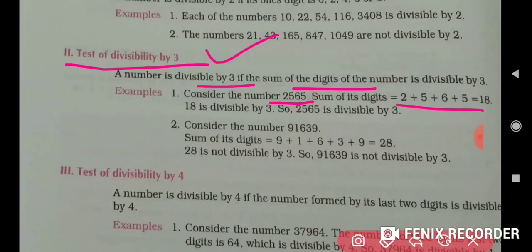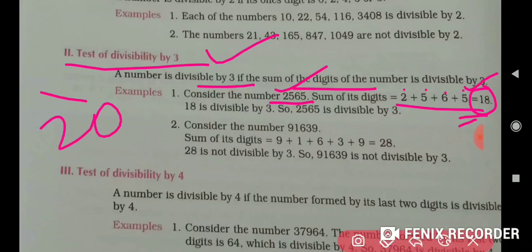2 plus 5 plus 6 plus 5 equals 18. Is 18 divisible by 3? Yes. So the sum of digits is 18, which is divisible by 3, so the number 2565 is also divisible by 3. If instead the sum of digits were 20, then since 20 is not divisible by 3, the required number would also not be divisible by 3.